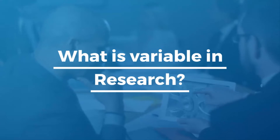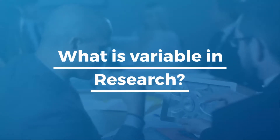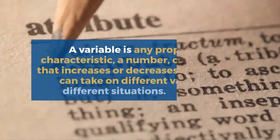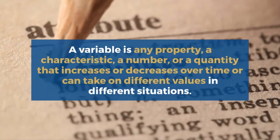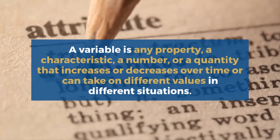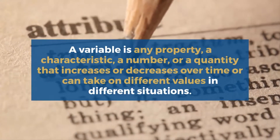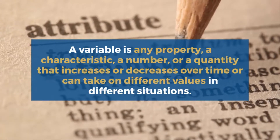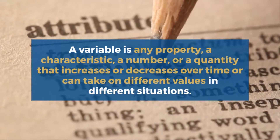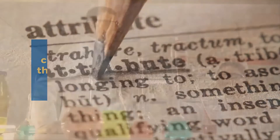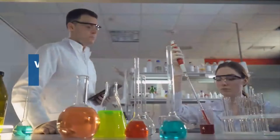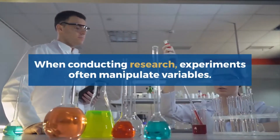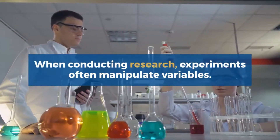What is a variable? A variable is any property, characteristic, number, or quantity that increases or decreases over time or can take on different values, as opposed to constants, such as n, that do not vary in different situations. When conducting research, experiments often manipulate variables.